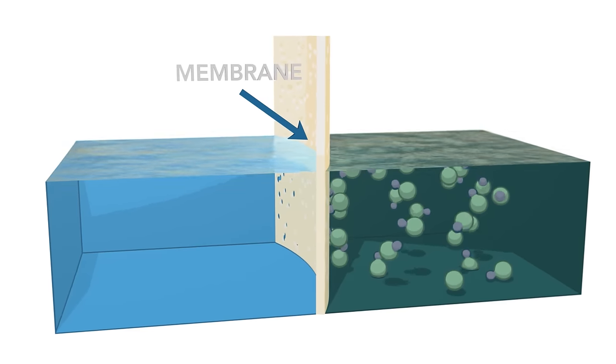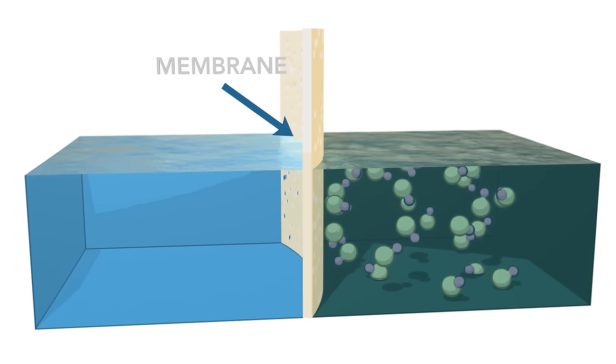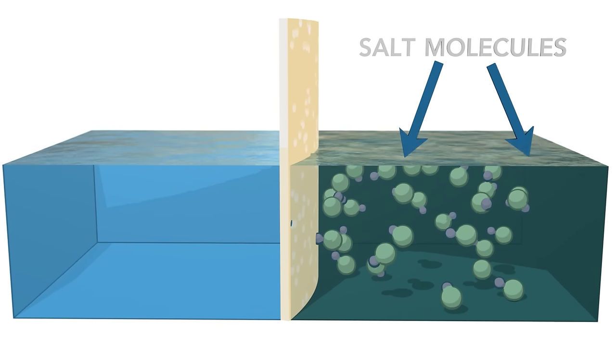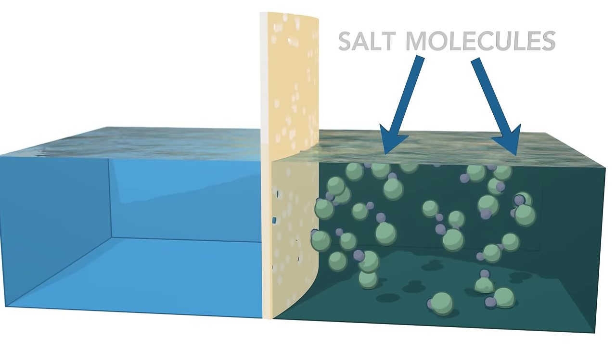The membrane or semi-permeable barrier allows some molecules, like water, through, but other molecules, like the majority of salts, are unable to easily pass through the membrane structure.